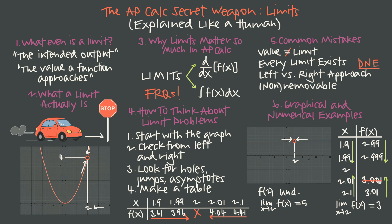If instead those right-hand values had been 1.001 and 1.01, it would look like the function approaches 3 from the left but approaches 1 from the right. The left-hand limit would be 3, the right-hand limit would be 1, and because those one-sided limits are not equal, the limit does not exist — we're not approaching the same value from both sides.